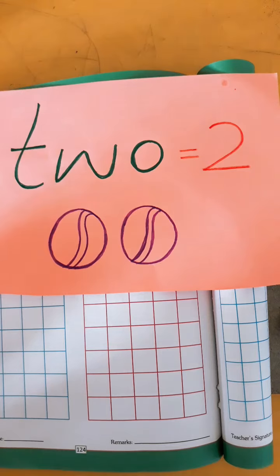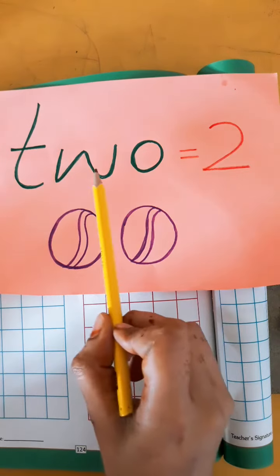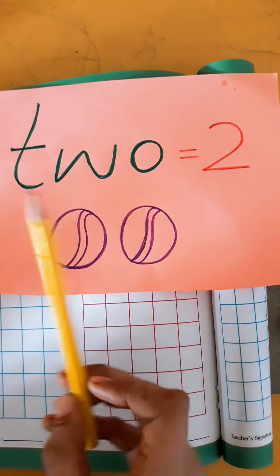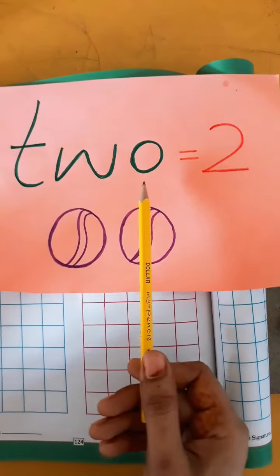Now students, read the 2 times the spelling of number 2 with me. T-W-O, 2. T-W-O, 2.